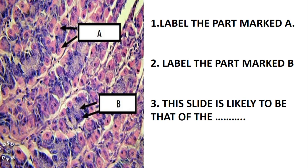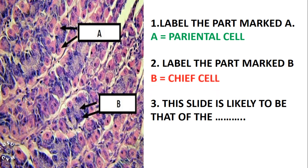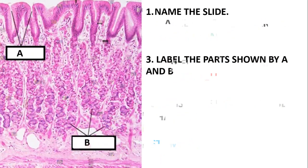Let's look at this next structure. Label the part marked A — these cells are just known as the parietal cells. Looking at this slide, it is likely to be taken from the stomach. Then label the part marked B — if A was the parietal cells, then B cells are just the chief cells. This slide is likely to be that of the stomach.